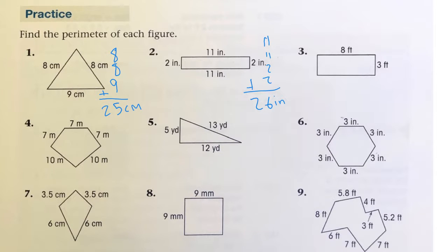Since one width is 3, then this width is 3. Since this length is 8, then that length is 8. The perimeter is all of those lengths added together. So 16 plus 6, 22 feet.